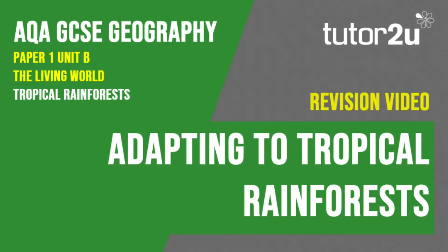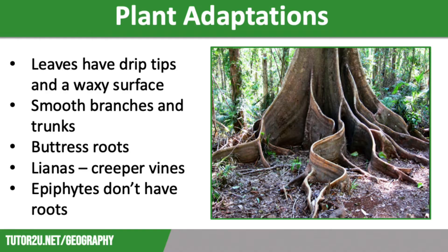Welcome to this Tutor2U revision video that looks at how animals and plants adapt to the conditions in the tropical rainforest biome. This is part of Paper 1, Unit B, The Living World. Tropical rainforests are home to over half of the world's animal species and more than two-thirds of global plant species. These species make various adaptations that enable them to thrive in the hot and humid conditions.